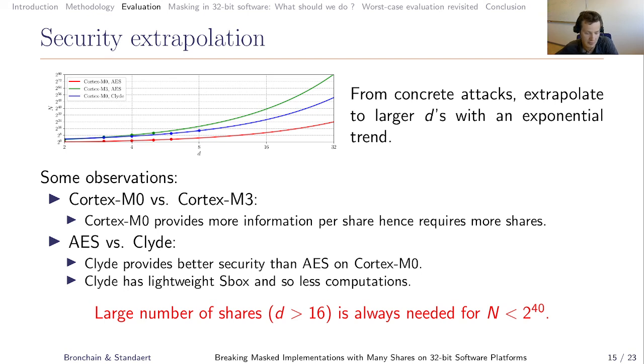Overall, we observe that in the best case, AES running on Cortex-M3, we need at least 16 shares to reach 40-bit security.